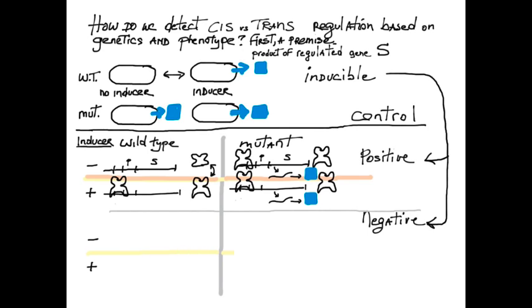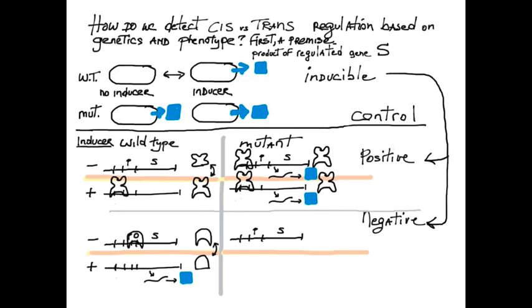The second manner of regulation is negative. Similar to the lac operon, a repressor is inactivated by the inducer. In the mutant, the repressor binding site operator O could be altered, preventing repressor binding and resulting in constitutive expression.